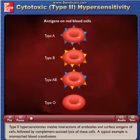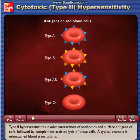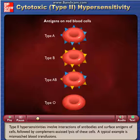Type 2 hypersensitivities involve interactions of antibodies and surface antigens of cells, followed by complement-assisted lysis of these cells. A typical example is mismatched blood transfusions.